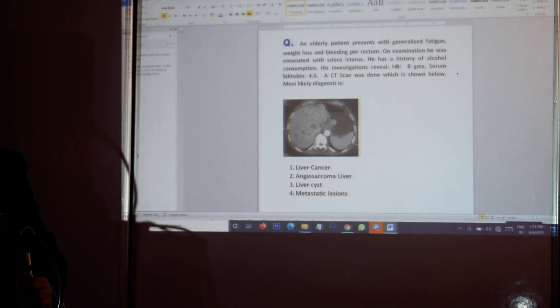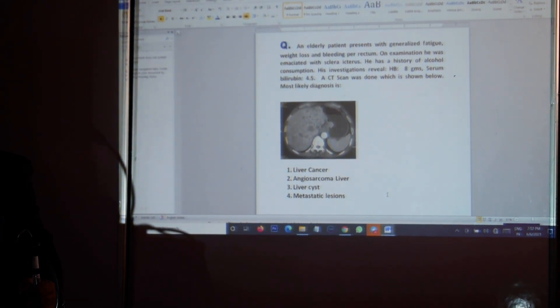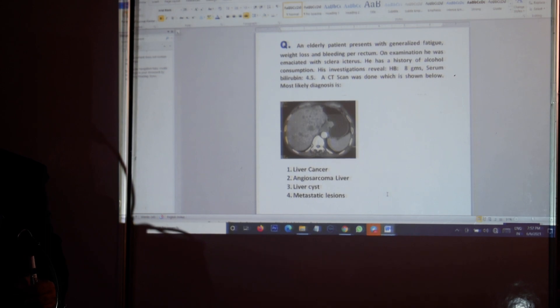The most likely diagnosis is liver cancer, angiosarcoma, liver cyst or metastatic lesions. To arrive at a diagnosis, we have to go briefly into the history and have knowledge about the radiological anatomy and radiographic features. There are multiple points mentioned: elderly patient, history of alcohol consumption, scleral icterus, low hemoglobin. These tend to be usually a feature of malignancies of the gut, especially the colorectal malignancies.